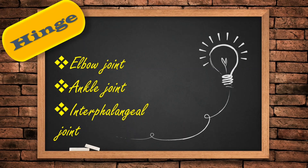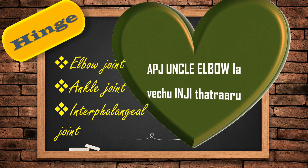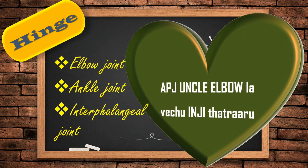Hinge joint review: elbow, ankle, and interphalangeal joint — these three are hinge joints. There are many types of joints and MCQs are very frequent. The hint is: APJ uncle elbow with the hinge. APJ is interphalangeal joint, uncle is ankle, elbow is the elbow joint, and inge refers to hinge joint.